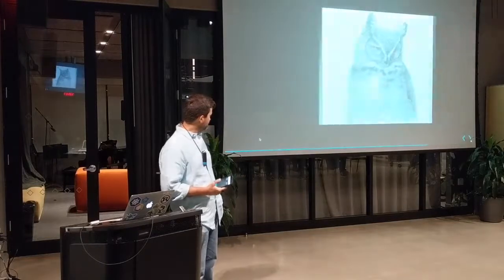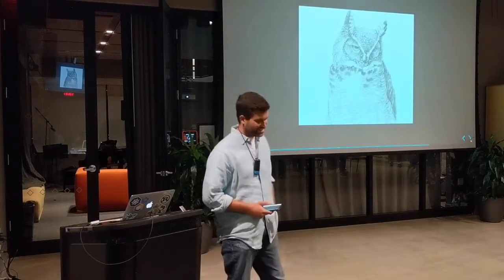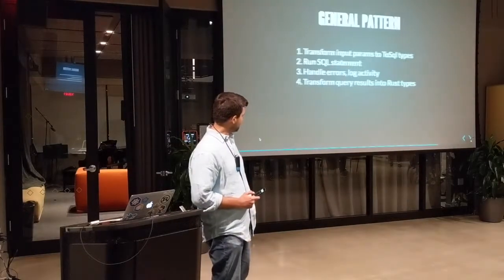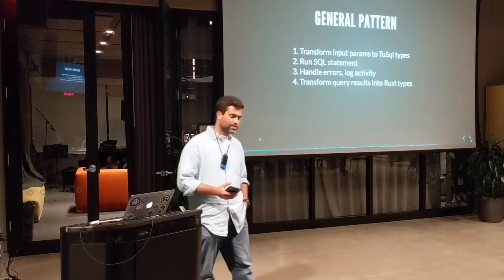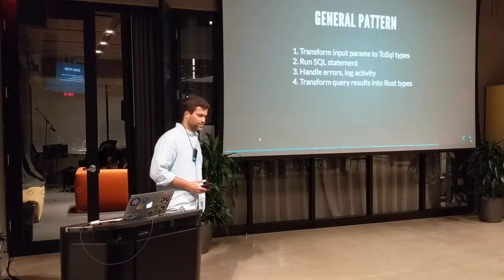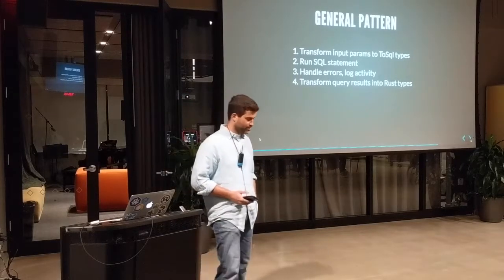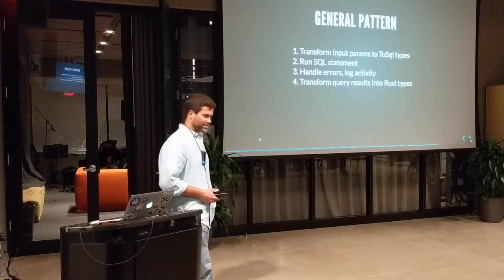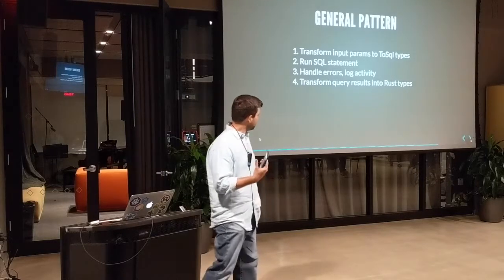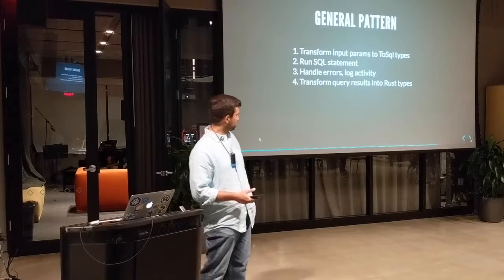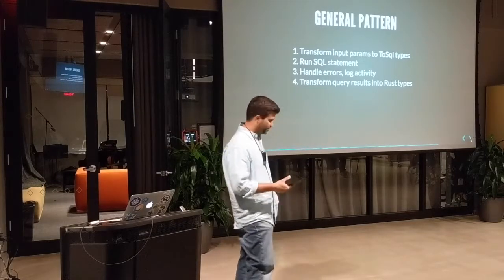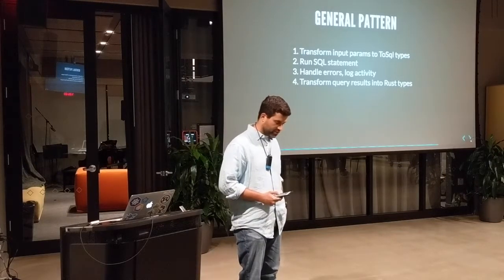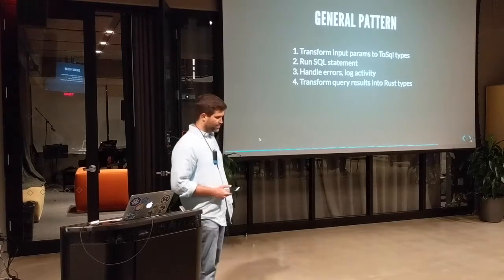There are two types of errors that generally occur when working with Postgres: not getting back a result at all, or a specific type of error raised by Postgres. Within those two error handling sections I'm covering both scenarios. The general pattern is: transform parameters to SQL types, run your SQL statement, handle errors and log activity, and finally transform the query results back into Rust types. If you go through the code base you'll see this all throughout models.rs.